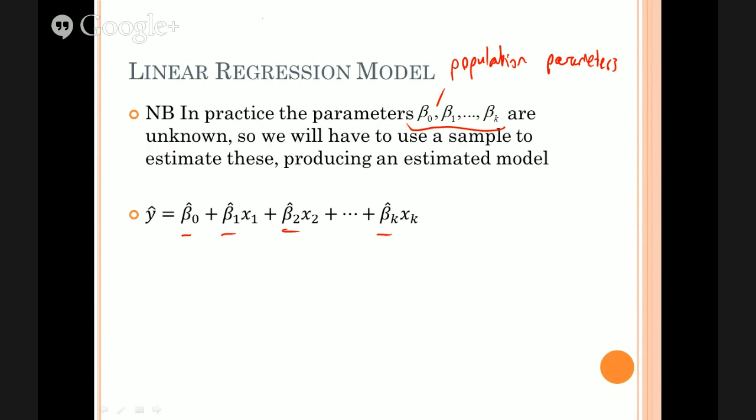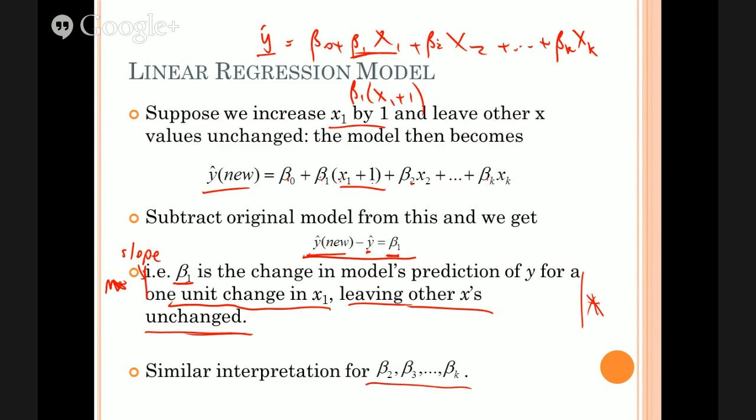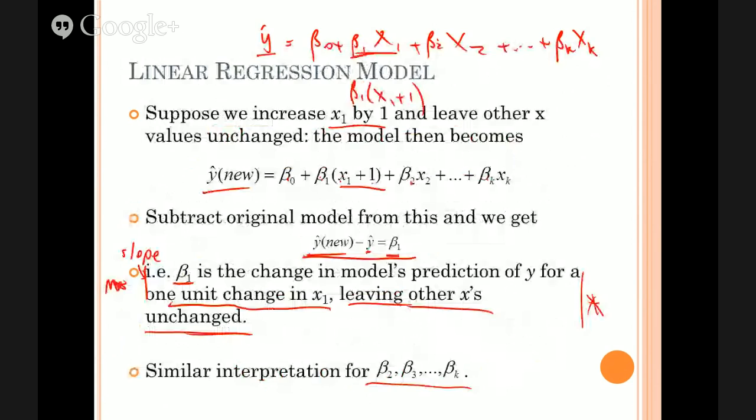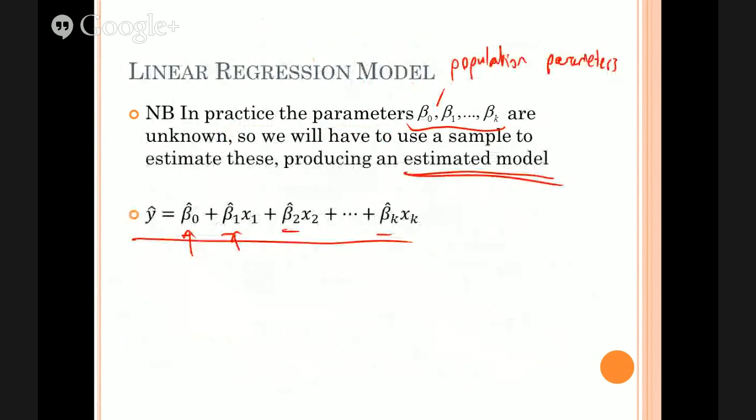So in fact, the estimated model will have hats on the betas to represent the fact that they are estimates based on a sample. So that becomes what we call our estimated model. The true model is this thing here where you've got the true betas but you never know the true model. The estimated model, get used to that jargon, is this one here where you replace the beta values with their estimates beta hats.